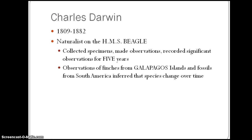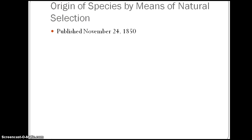He made observations on all of these things, including the finches of the Galapagos Islands, and compared them to fossils he found in other places. He concluded from these findings that there were similarities among species all over the world. When he published a book called The Origin of Species by the Means of Natural Selection, he not only showed his research, but he provided a mechanism for evolutionary change called natural selection — now known as the survival of the fittest.